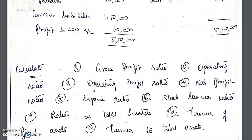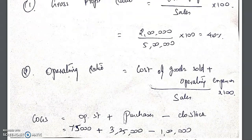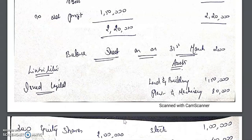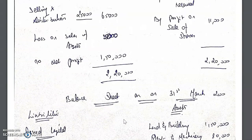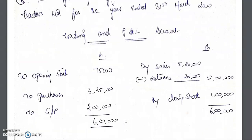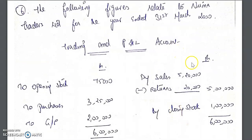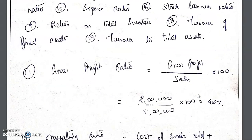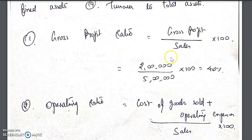For gross profit ratio, the formula is gross profit divided by net sales into 100. Net sales = sales minus sales returns = 5,20,000 minus 20,000 = 5,00,000. Gross profit is 2,00,000. So gross profit ratio = 2,00,000 divided by 5,00,000 into 100 = 40 percent.